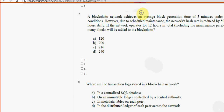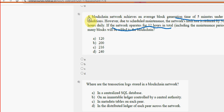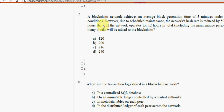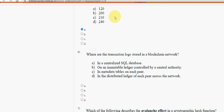Fifth question: block generation time is 5 minutes. If the network operates for 12 hours in total, how many blocks will be added to the blockchain? For the fifth question, the probable answer is Option A — 120 blocks. Mark Option A.